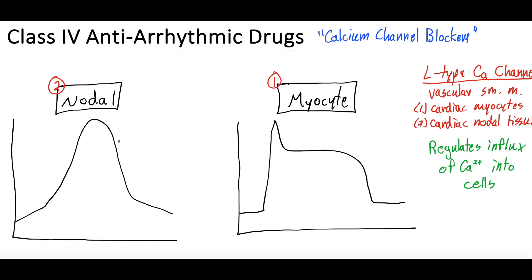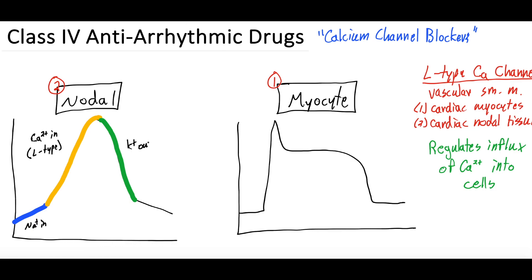First, let's talk about the nodal tissue. When the nodal tissue starts to depolarize, you get a sodium influx — sodium goes in. After that, you actually get a calcium influx from those L-type calcium channels, specifically L-type calcium in. Then after that, you will get the efflux of potassium — potassium out — leading back down to the more negative resting potential of the nodal tissue. Keep that in mind as we come back to the effect of blocking this calcium channel.